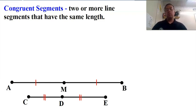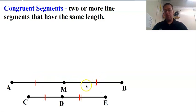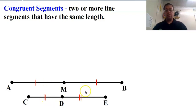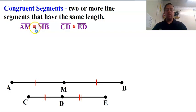Congruent segments are two or more line segments that have the same length, and the way we show that in a diagram is with these little tick marks. So AM has one tick mark and MB has one tick mark, so they are congruent to each other. CD and DE have two tick marks, so they are not congruent to those first two segments, but they are congruent to each other. Segment AM is congruent to segment MB. Segment CD is congruent to segment ED.